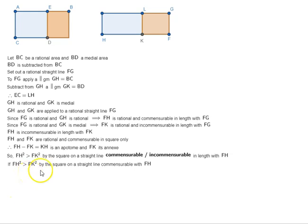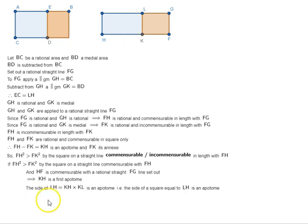If FH square is greater than FK square by the square on a straight line commensurable with FH and HF is commensurable with a rational straight line FG set out, means KH is a first apotome. And we have previously seen that the side of LH, that is LH is nothing but KH by KL. And when we say side of LH, it means the side of a square whose area is equal to LH is an apotome. But EC is equal to LH, so the side of EC is an apotome.